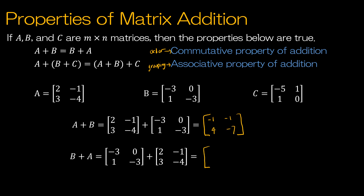And if we add in the other order, just like normal addition is commutative, we can see that negative 3 plus 2 is still negative 1, 0 plus negative 1 is still negative 1, 1 and 3 is 4, and negative 3 and negative 4 is negative 7. So this is just an example, not a proof, but an example showing the commutative property of addition. Your textbook does have an actual mathematical proof, but that is not our focus in this course.